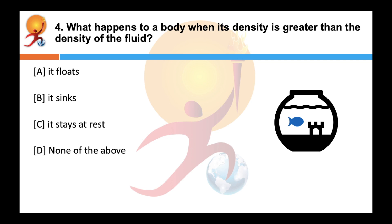What happens to a body when its density is greater than the density of the fluid? This is pretty easy. Correct answer is B. So the body sinks in the fluid in case its density is greater than the density of the fluid. For example, an iron nail has greater density than the water. Therefore, it sinks in the water.